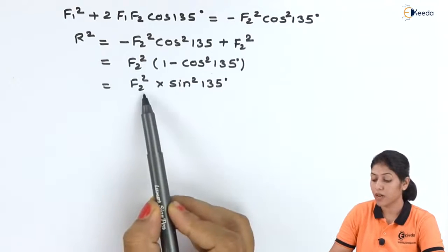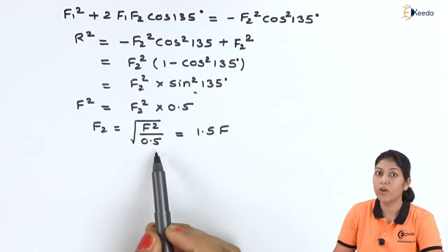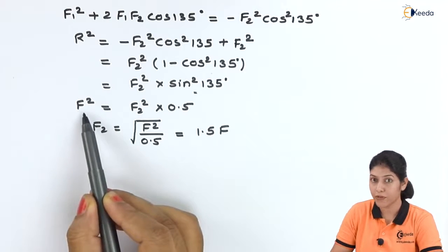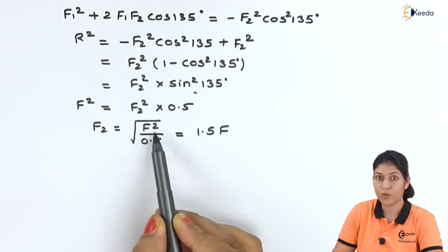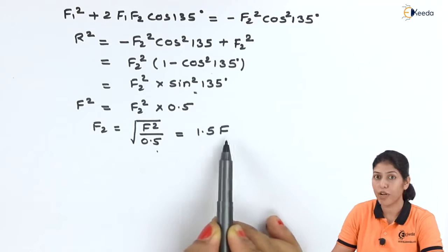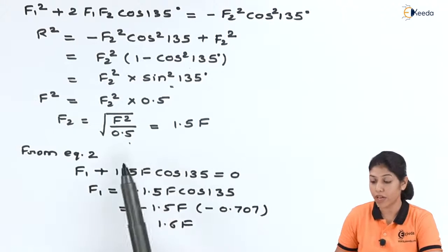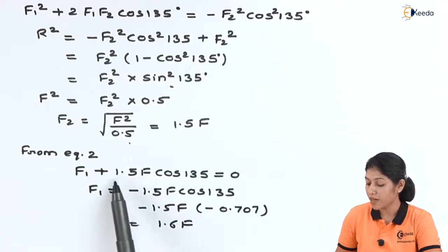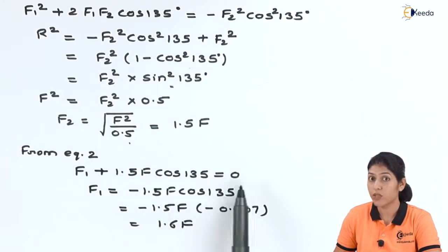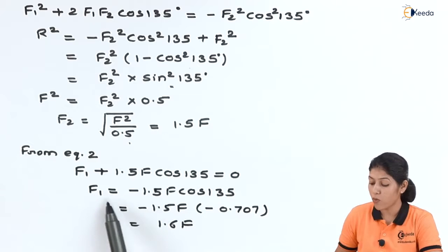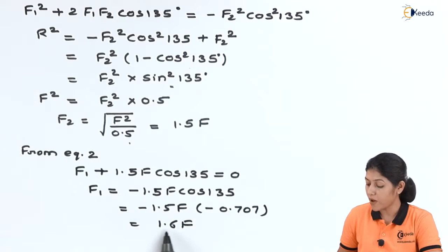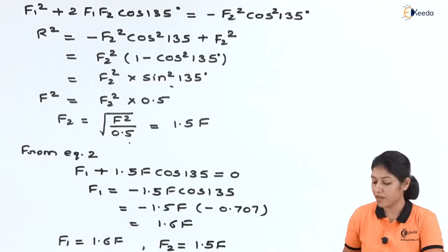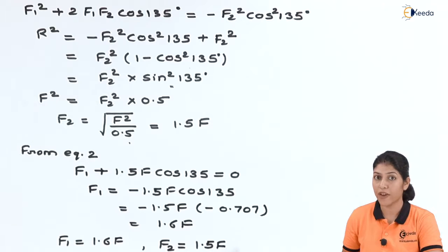Our final equation is F² = F2² · sin²135°. Since sin²135° equals 0.5, we get F² = 0.5·F2², so F2 = √(F²/0.5), giving F2 equals approximately 1.5F. Substituting this value of F2 into equation 2: F1 + 1.5F·cos135° = 0, so F1 = −1.5F·cos135°. Since cos135° is negative, the final value of F1 is approximately 1.06F. We now have both answers: F1 ≈ 1.06F and F2 ≈ 1.41F.